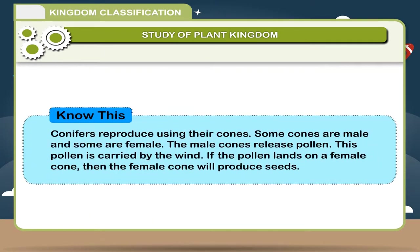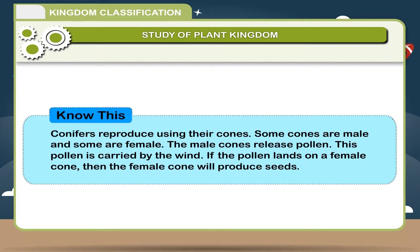Conifers reproduce using their cones. Some cones are male and some are female. The male cones release pollen, which is carried by the wind. If the pollen lands on a female cone, then the female cone will produce seeds.